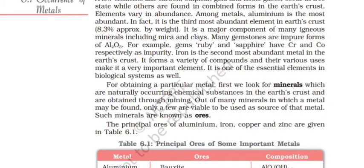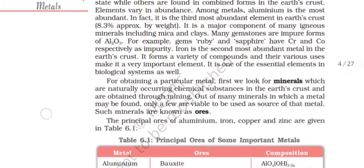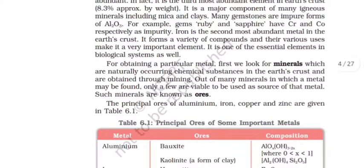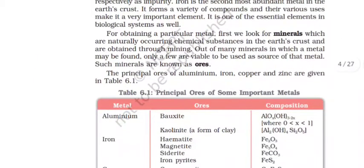For obtaining a particular metal, first we look for minerals, which are naturally occurring chemical substances in the Earth's crust, and are obtained through mining. Out of many minerals which a metal may be found, only few are viable to be used as the source of that metal. Such minerals are known as ores.